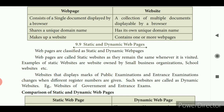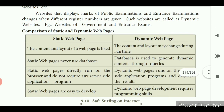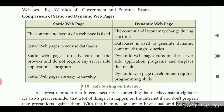In a static web page the data cannot be changed — it is permanent. In a dynamic web page the data changes for each register number. Examples of dynamic websites are government and entrance exam websites. Differences: in a static web page the content and layout are fixed; it never uses a database. A database is used to generate dynamic content through queries. A dynamic web page uses a database. Static web pages run directly on the browser and do not require any server-side application program, but dynamic web pages run on the server side and display results. Static web pages are easy to develop; dynamic web page development requires programming skills.